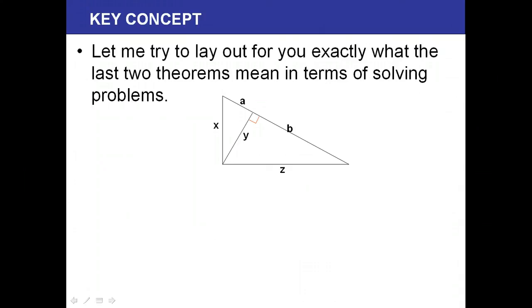So let me try to lay out for you exactly what the last two theorems mean when it comes to solving problems. What it says is that a leg is equal to the geometric mean of the part of the leg, so X is equal to the geometric mean between A, the part of the leg next to it, and A plus B, which is the entire hypotenuse. The altitude itself is equal to, this is a right triangle, the altitude itself is equal to the geometric mean of the two parts. And the other leg is equal to the geometric mean of the part next to it, B, and the entire hypotenuse, A plus B. So let's see how this plays out in working some problems.